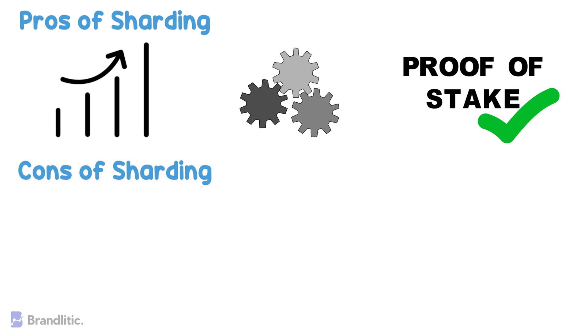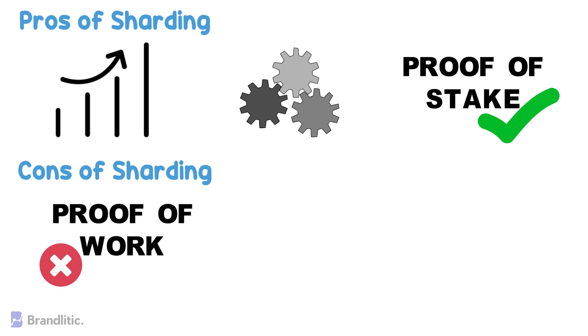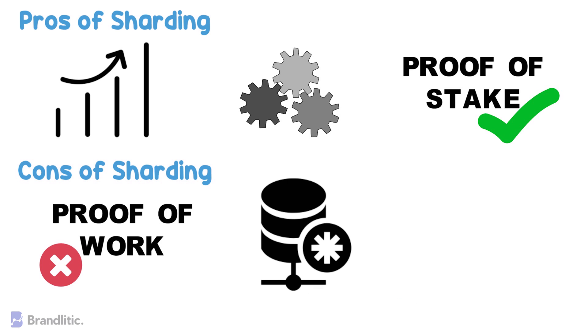Now to the cons of sharding: one, it's quite difficult to implement for Proof-of-Work protocols; two, it makes the database and its application more complex; three, if sharding is not executed well, it can impose a lot of security and privacy concerns.